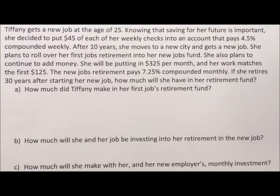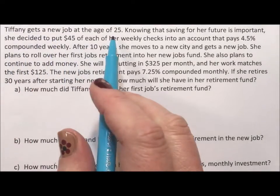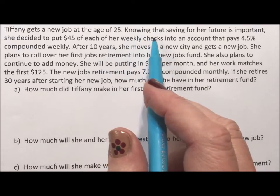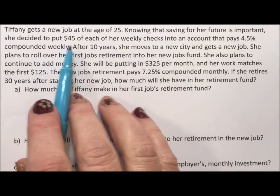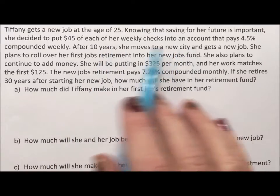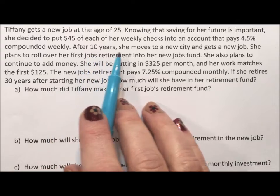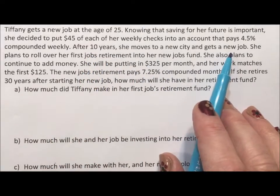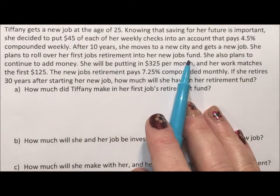Tiffany gets a new job at the age of 25. Knowing that saving for her future is important, she decides to put $45 of each of her weekly checks into an account that pays 4.5% compounded weekly. After 10 years she moves to a new city and gets a new job, that's pretty common. She plans to roll over her first job's retirement into her new job's fund, that's really really common.